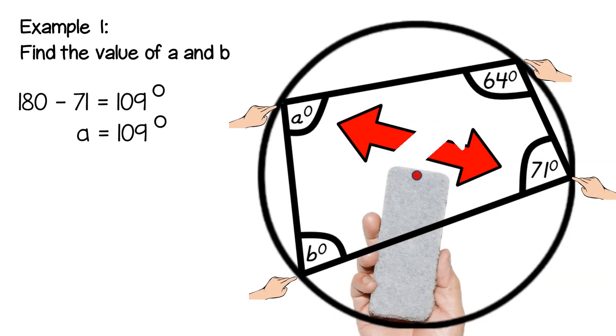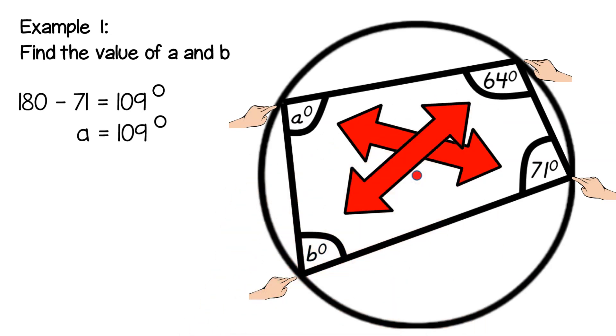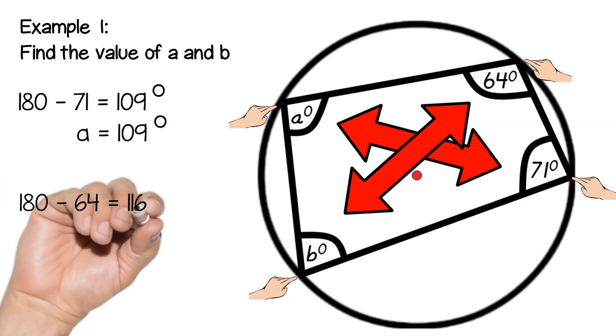Likewise we have another set of opposite angles so 180 minus 64 gives us our value for b which is 116 degrees.